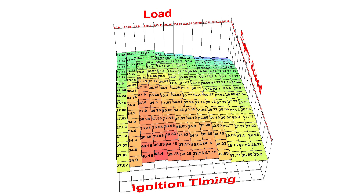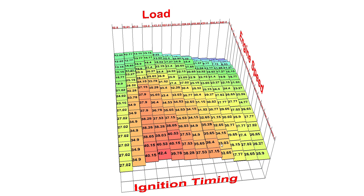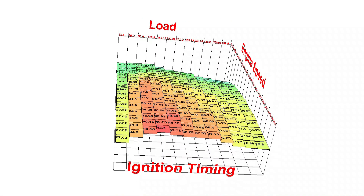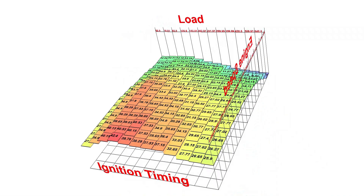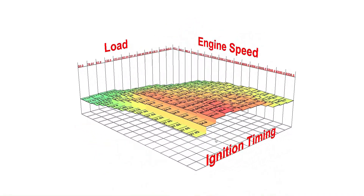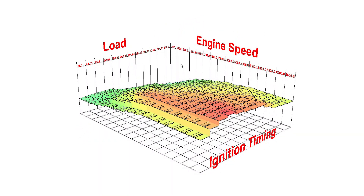Adjusting the cells in the map at lower RPM and load values for higher ignition advance is also possible. However, power gains in those areas are not confirmed, but may result in a bit snappier throttle reaction.